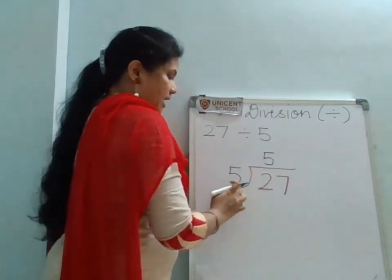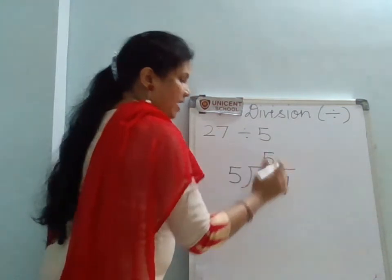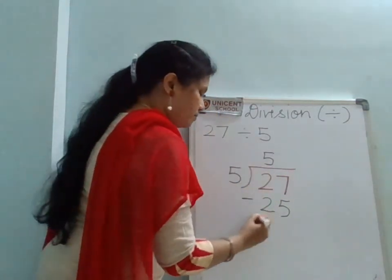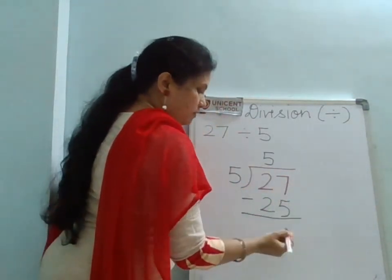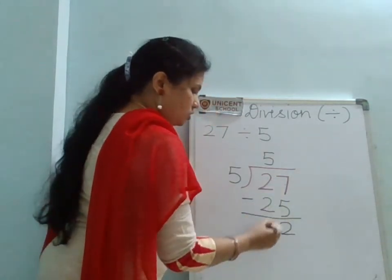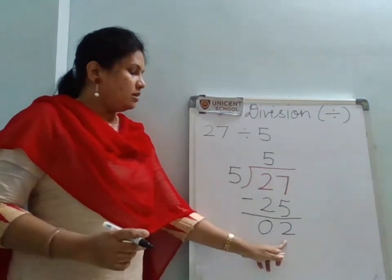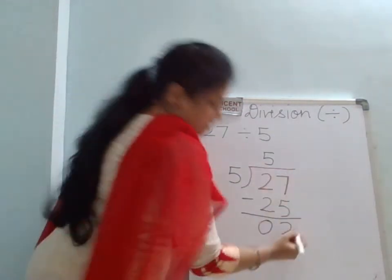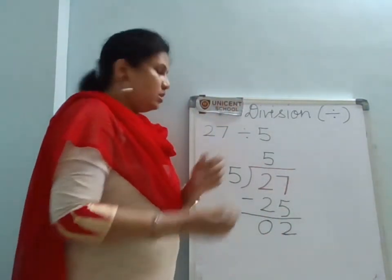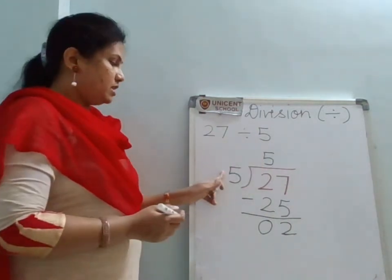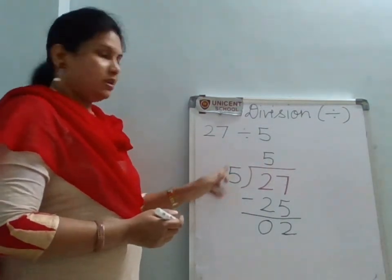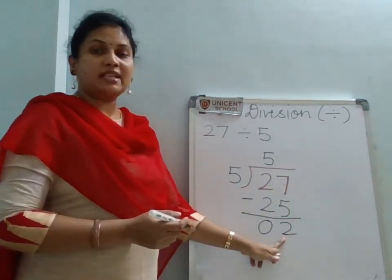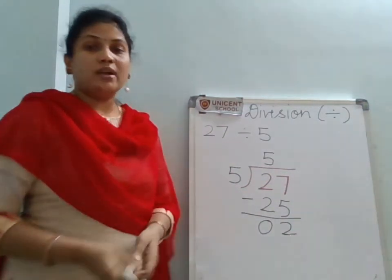So 5×5=25. Now we subtract: 27 minus 25 is 2. Can we divide 2 by 5 again? No, because 2 is less than 5. So the remainder is 2 and the quotient is 5. To summarize: the dividend is 27, the divisor is 5, the quotient is 5, and the remainder is 2. This is long division.